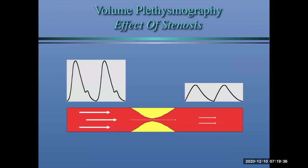Looking at PVRs with stenosis — it's pretty obvious. You lose amplitude, the rapid upstroke is gone, you have rounding of the peak, and you've lost the dicrotic notch. That tells you there's some level of disease, whether stenosis or occlusion. Remember, this is a functional test giving you the volume of blood flow occurring — it tells you about physiologic flow.